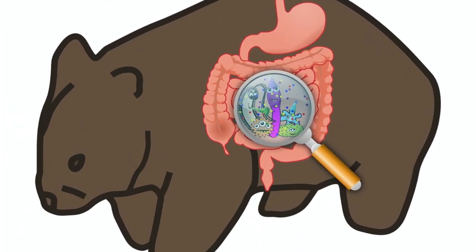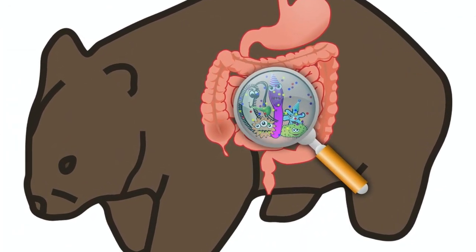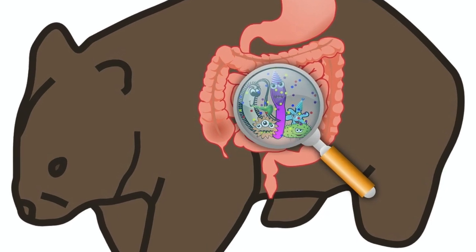The study concluded that the varying elastic properties of wombats' intestinal walls allowed for the cube formation.